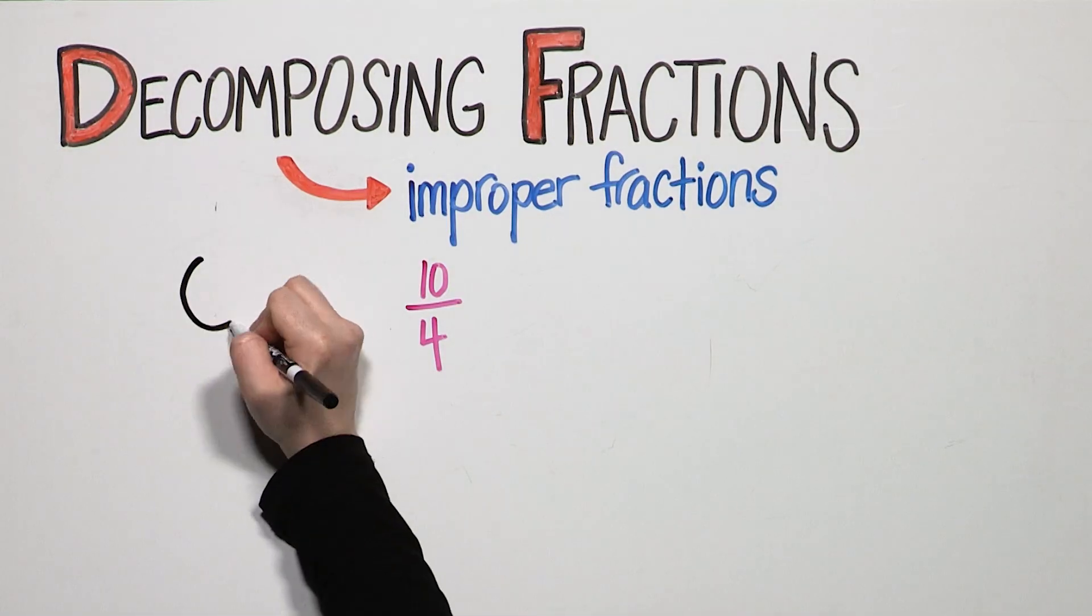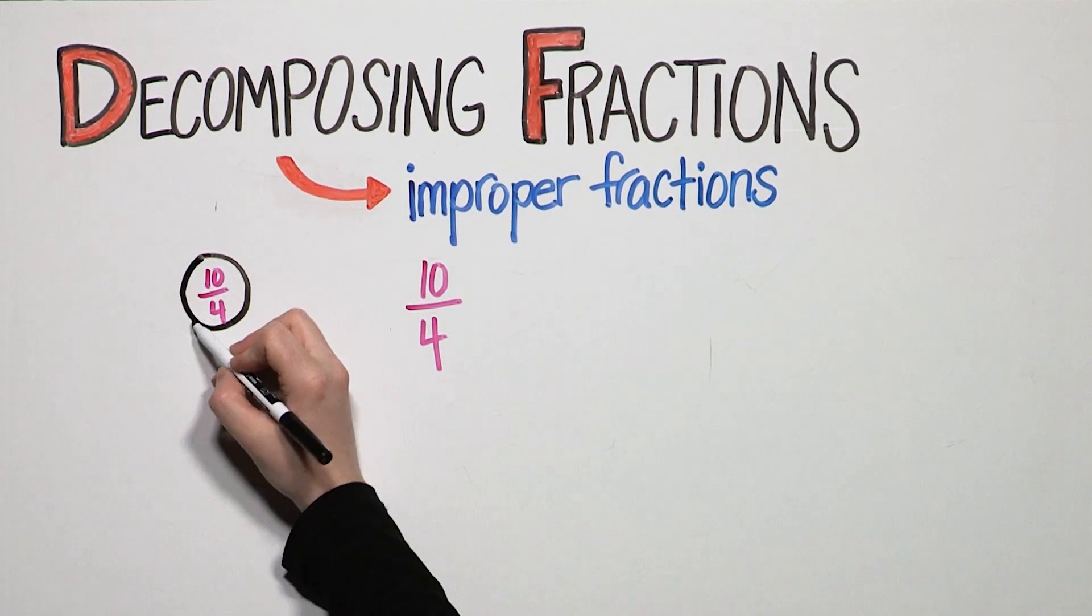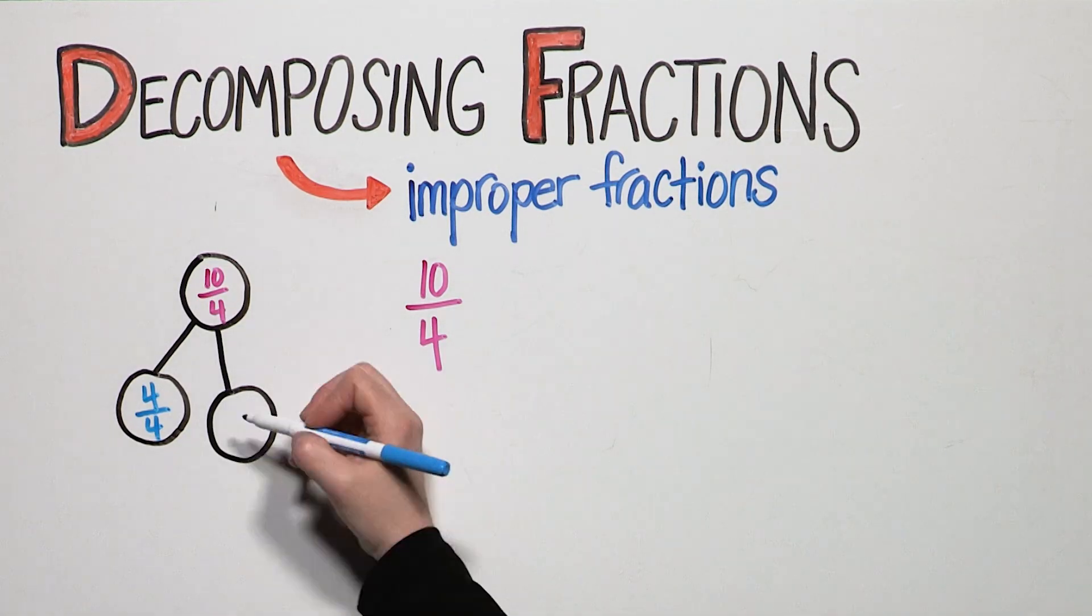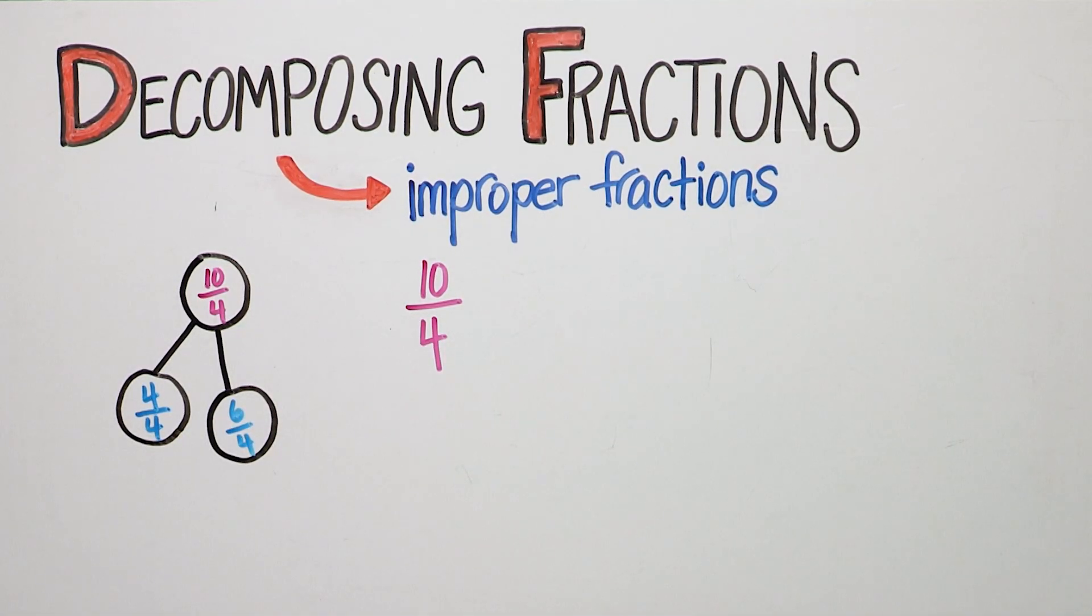Your child will decompose an improper fraction by considering the denominator and pulling out one whole. Four fourths equals one whole. After pulling out four fourths, six fourths remain.